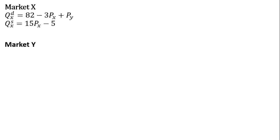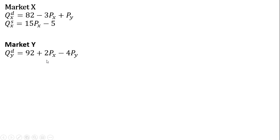And then we have the other market, the market for good Y. The quantity demanded of good Y looks as follows. Once again, the quantity demanded for the good and the price of the good itself are negatively related — just the law of demand. But as the price of good X increases, people will seek out a substitute and they'll want to buy more of good Y. So the coefficient on the price of good X here is positive because good X and good Y are substitute goods.